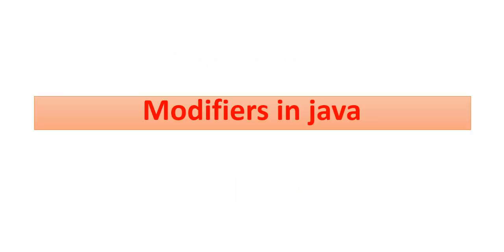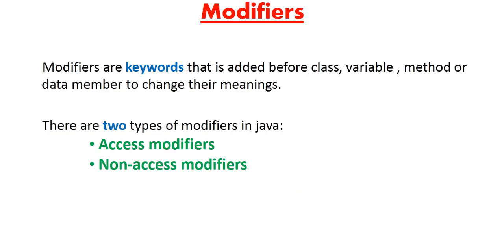Modifiers in Java — modifiers are keywords that are added before a class, variable, method, or data member to change their meaning. Since modifiers are keywords, we have seen from the list of keywords that modifiers fall within that category. There are two types of modifiers in Java: one called access modifiers and another called non-access modifiers.